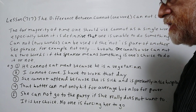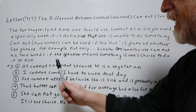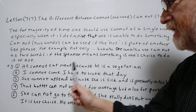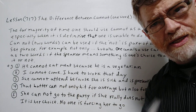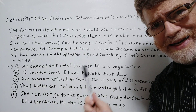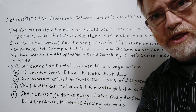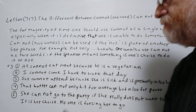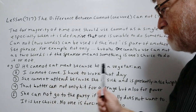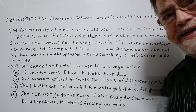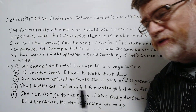We've got several examples here to show just how it's used. Number one: 'He cannot eat meat because he is a vegetarian.' This is very definitive — he can't eat meat, maybe according to his religion or his beliefs. Number two: 'I cannot come. I have to work that day.' He's got a responsibility, he has to work, so it's very definitive.